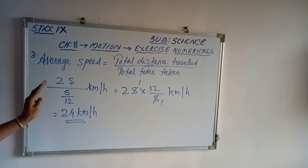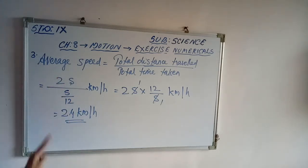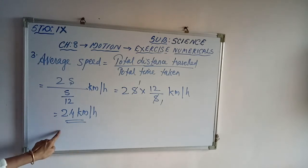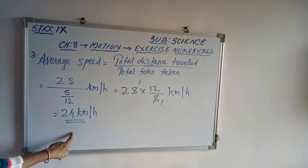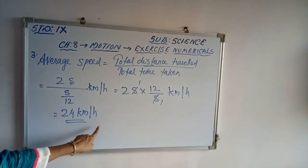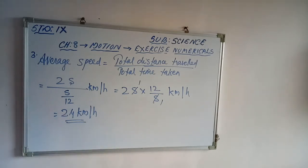Therefore, the average speed of Abdul's trip is 24 kilometers per hour.